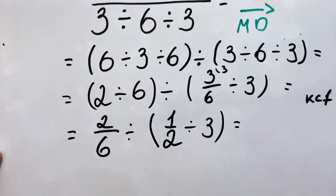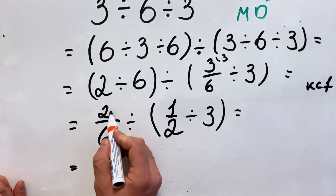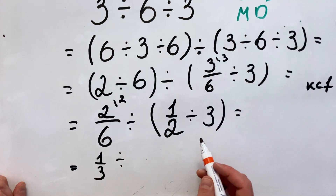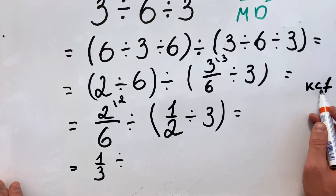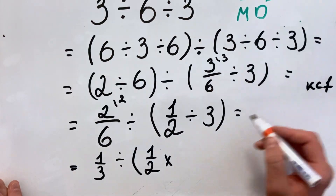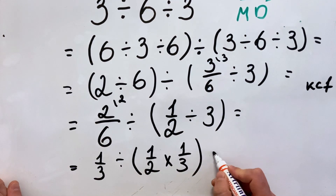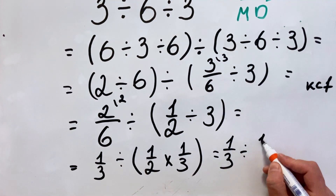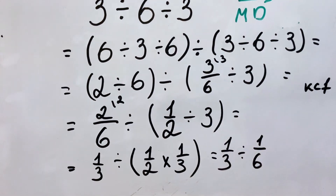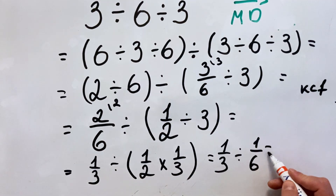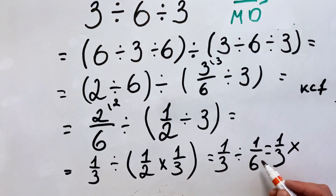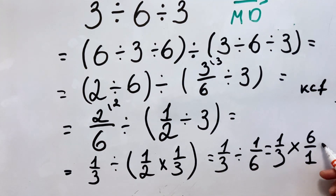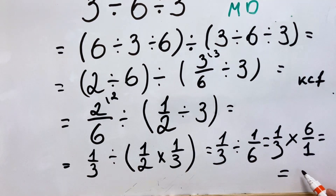So what do we get? In the end we have 2 divided by 6, simplified by 2, giving us 1 third, divided by 1 over 2. We keep the first, change the sign to multiplication, and flip the second. So we have 1 over 3 divided by 1 over 2, multiplied by 1 over 3 equals 1 over 6. Then we apply the same rule again: keep the first, change the sign, and flip the second. So we have 1 over 3 multiplied by 6 over 1 equals 6 over 3, and the result is 2.